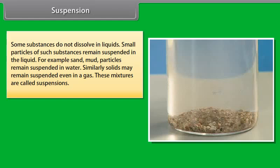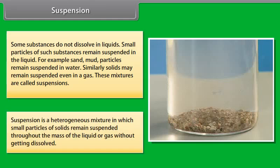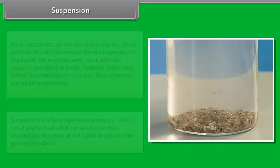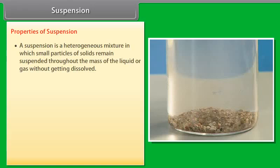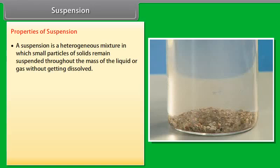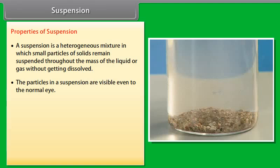A mixture of two or more substances can be a solution, a suspension, or a colloid. A substance is said to be in a state of molecular dispersion when its particles are of molecular, atomic, or ionic size. A solution is a homogeneous molecular dispersion of two or more substances — it can also be stated as a homogeneous mixture of two or more substances. Homogeneous means uniform throughout, so a solution will have a uniform composition throughout.